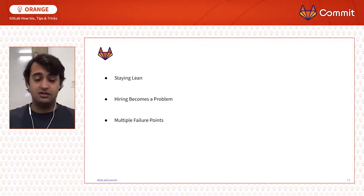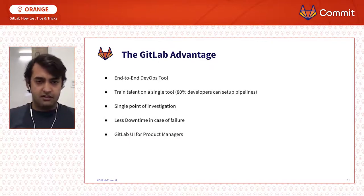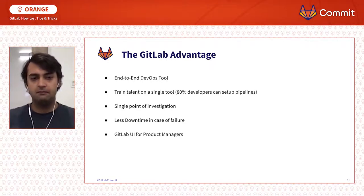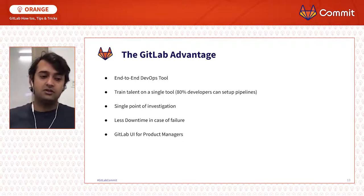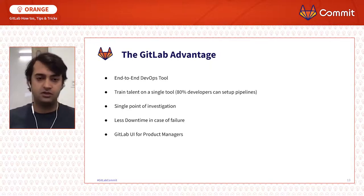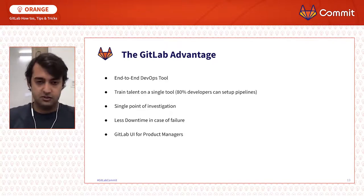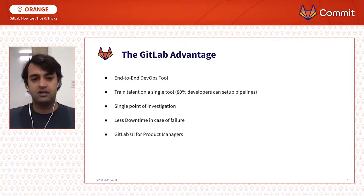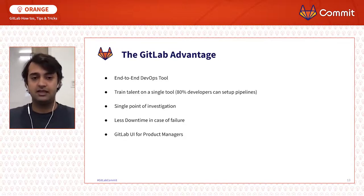The biggest advantage I found with GitLab was that it took me about two weeks to figure out everything regarding the CI/CD pipeline — how to run different jobs on different environments — and then it became very mainstream and easy. It also became much easier to train talent, since GitLab was the single go-to place for pushing, testing, and deploying code. In case of bugs we had a single point of investigation, which meant less downtime. And for product managers and non-technical people, GitLab's UI makes it easy to visualize the entire development and DevOps process.